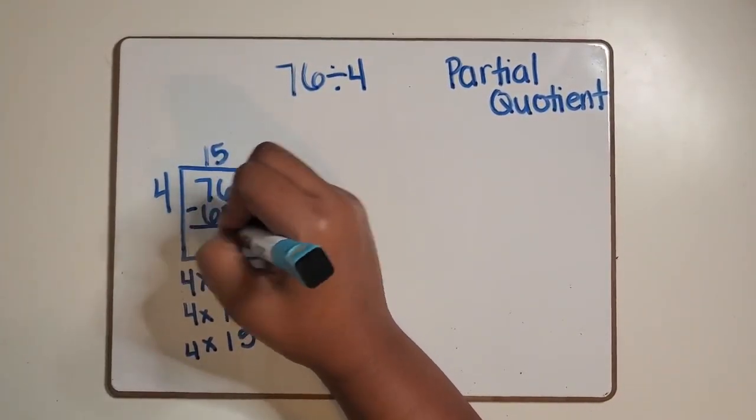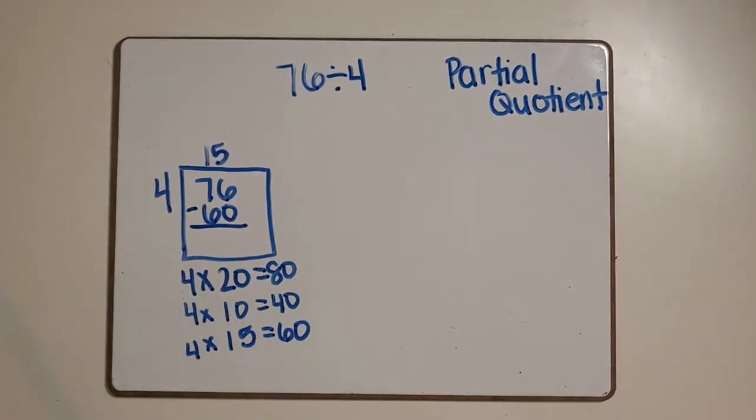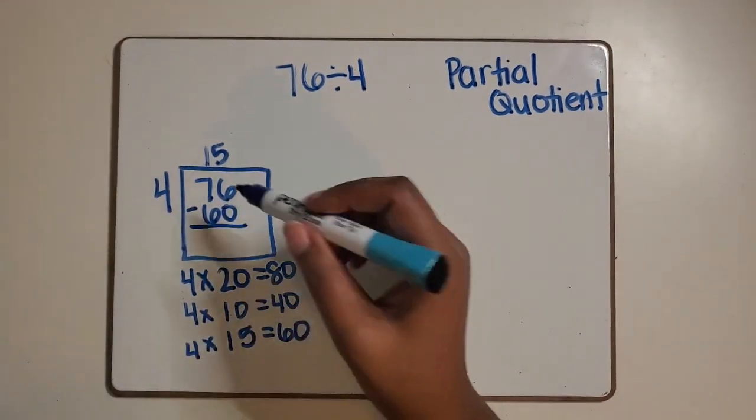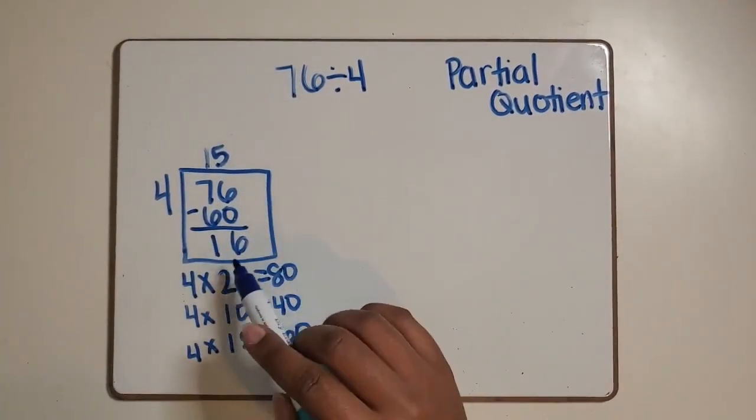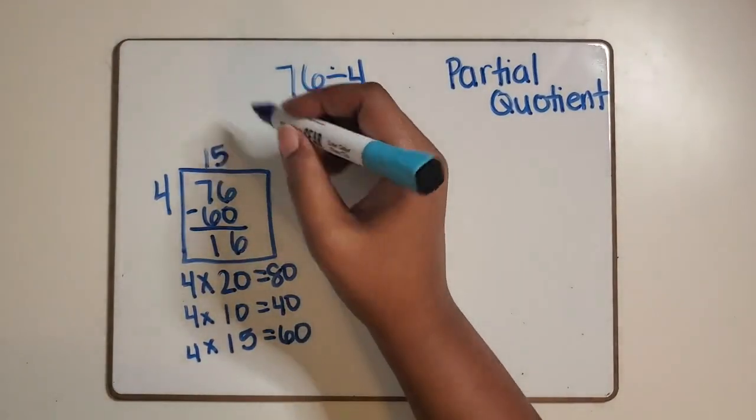So four groups of 15 is 60. We found part of this product or total. We are going to subtract the 60 from 76 and then we'll have 16 left over.